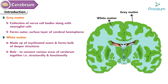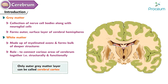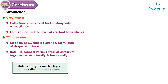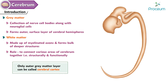Strictly speaking, only the outer gray matter layer can be called the cerebral cortex. More details about white matter will be discussed as a separate topic. The cerebrum is derived embryologically from the telencephalon, so the telencephalon is also known as the cerebrum.